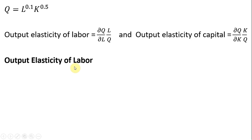Let's start with output elasticity of labor. First, we'll calculate the marginal product of labor, the partial derivative. Doing that, bring the 0.1 down in front. 0.1 minus 1 leaves L raised to the minus 0.9 power. We don't have to do anything with the K term; it just hangs around.